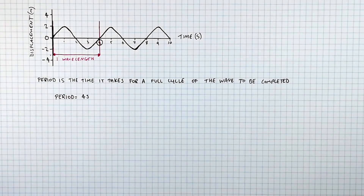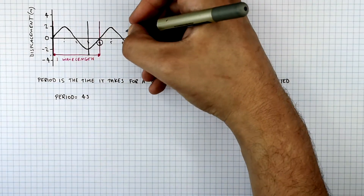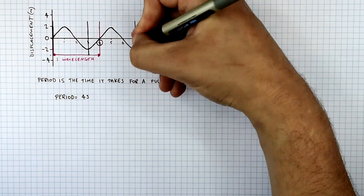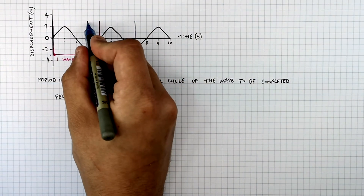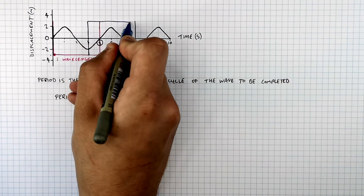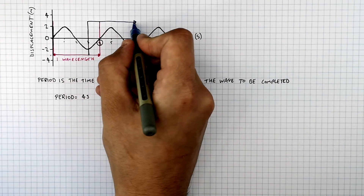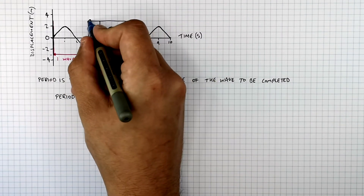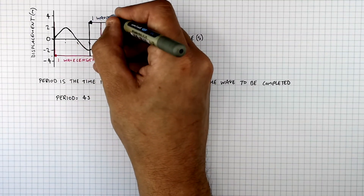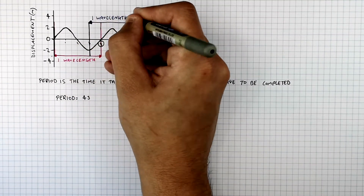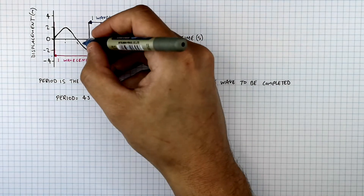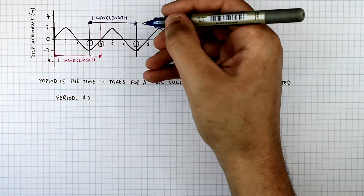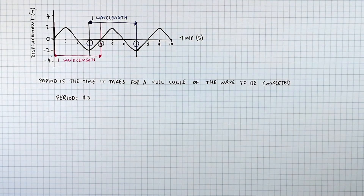If we go from the trough of one wave to the next equivalent trough of the next wave, that will have taken four seconds to complete that one wavelength — from three seconds to seven seconds. So four seconds is the period.